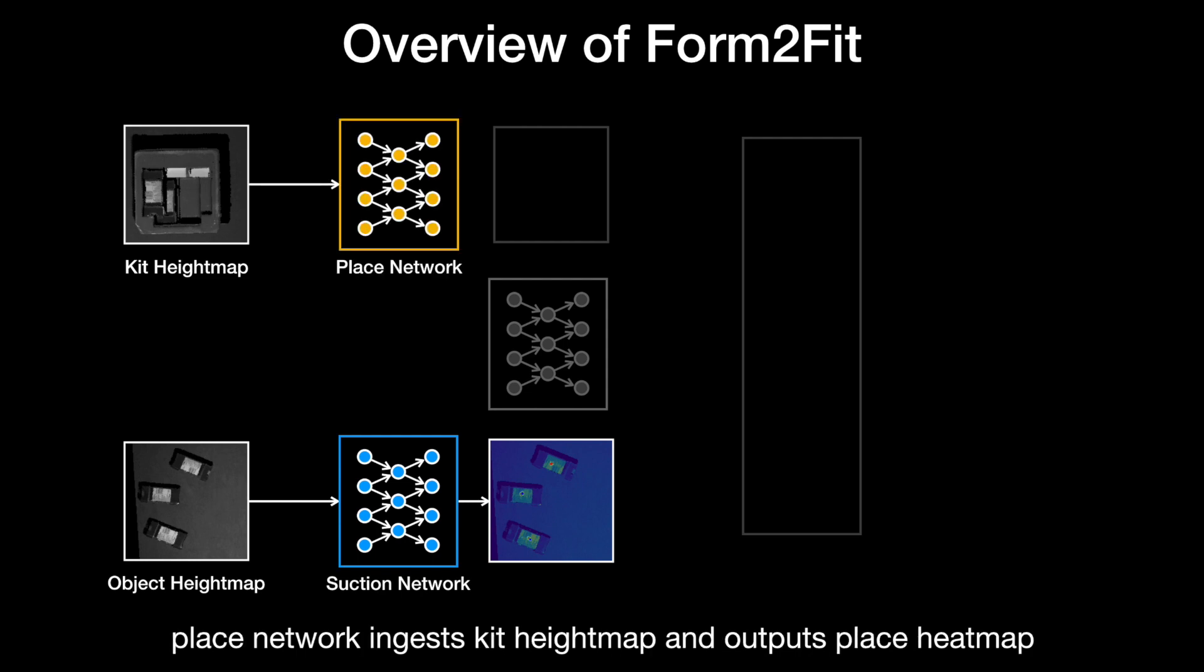Similarly, the kit height map is fed to a place module to produce pixel-wise predictions of placing success. The 3D locations of the pixels with higher confidence serve as better locations for the suction gripper to approach from a top-down angle to place the object.